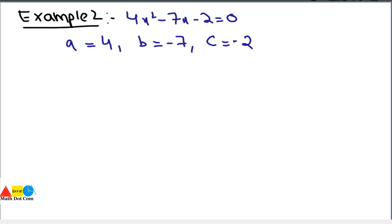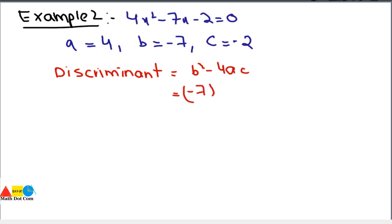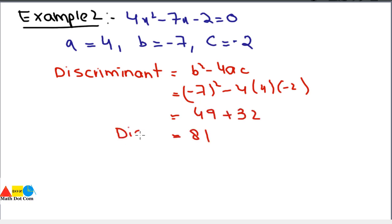We put the values of a, b, and c into the discriminant formula: b² minus 4ac. That gives us (-7)² minus 4 × 4 × (-2), which equals 49 plus 32, equals 81. The discriminant is 81, which is greater than zero.